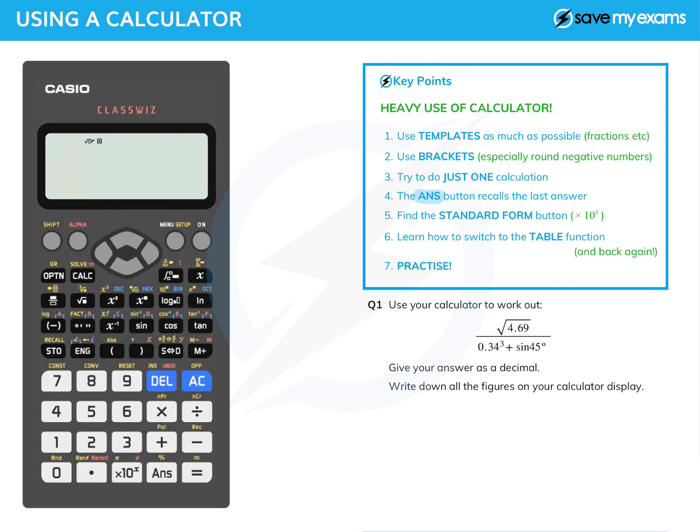If you need it, the ANS button recalls the last answer. How do you do standard form? You need the times 10 to the x button which is at the bottom in the middle. At some point later we'll look at how to use the table function. The real key here is to do as many questions as possible.